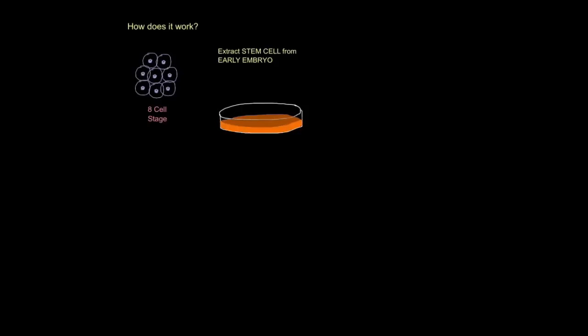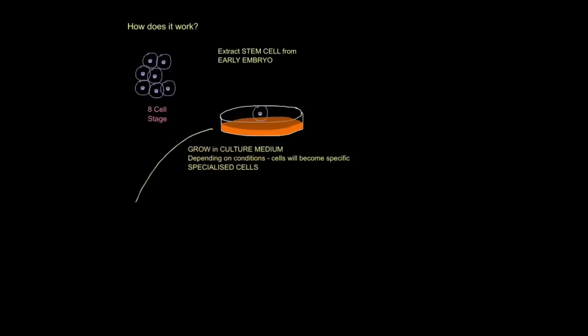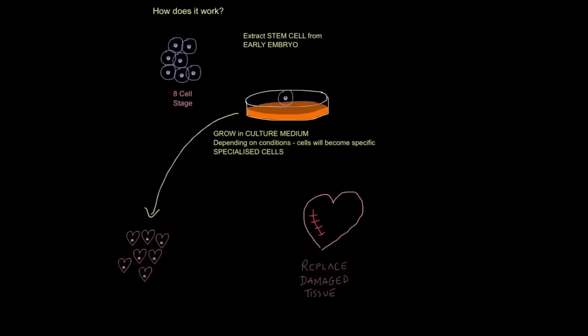So how does therapeutic cloning work? Well, the first thing is you extract a stem cell from an early embryo. So I'll take this one. You then grow it in a culture medium. That's basically a medium which contains the right nutrients and right hormones to basically develop a certain way. So depending on the conditions, the cells will become specific, specialized cells. So let's say we've given the conditions that help the cells develop into heart muscle cells or cardiac muscle cells. We can then replace damaged tissue in a patient's heart. So you can see how therapeutic cloning is very useful in saving lives.